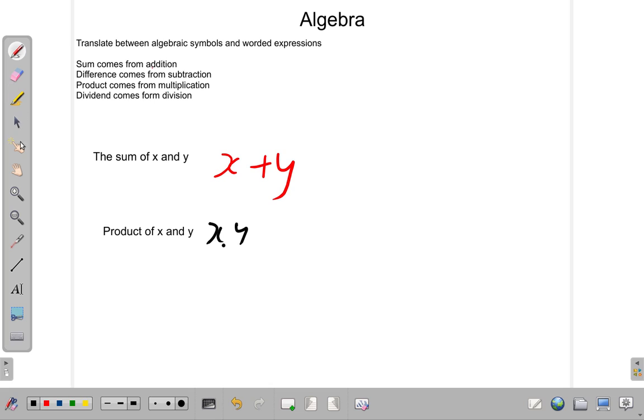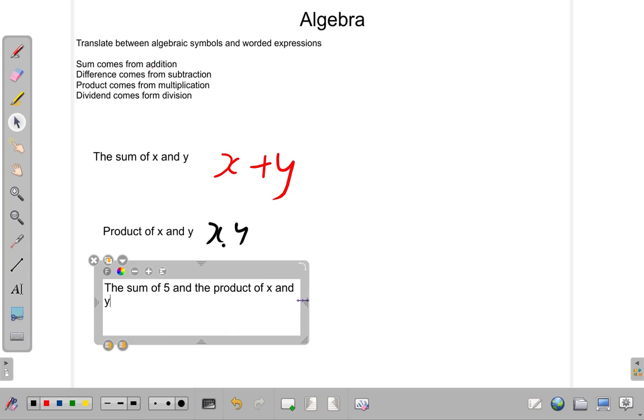Now let's look at another one. What I want is the sum of 5 and the product of x and y. I want the sum of 5 and the product of x and y. How do I deal with that?